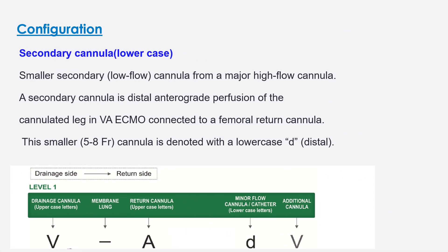Secondary or low-flow cannulas are written in lowercase. These cannulas can be used to unload the ventricle, or for example, as a distal antegrade perfusion cannula to cannulate the leg in VA ECMO. They are connected to the main femoral return cannula, with the distal part going to the superficial femoral artery. These are small cannulas, five to eight French, and are written in lowercase to denote their distal, secondary role.